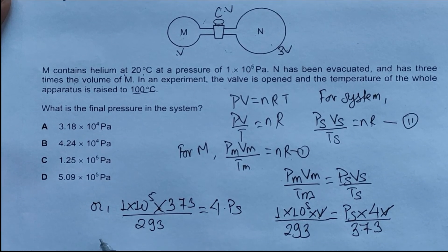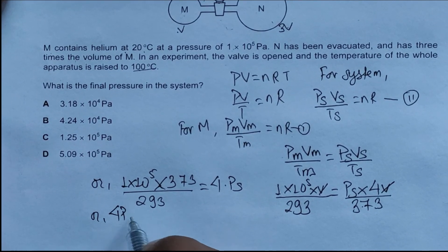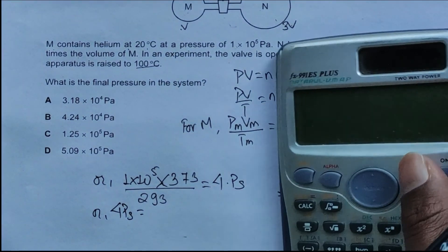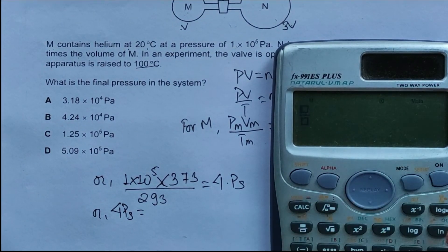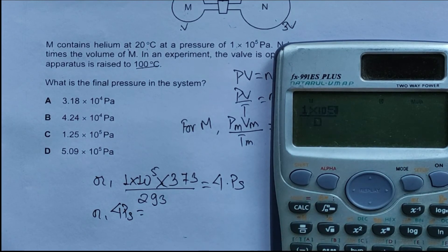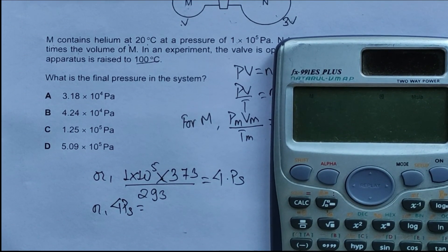Now we have 4 times P_S equals 1×10^5 times 373 divided by 293. If we divide by 4, we have P_S.